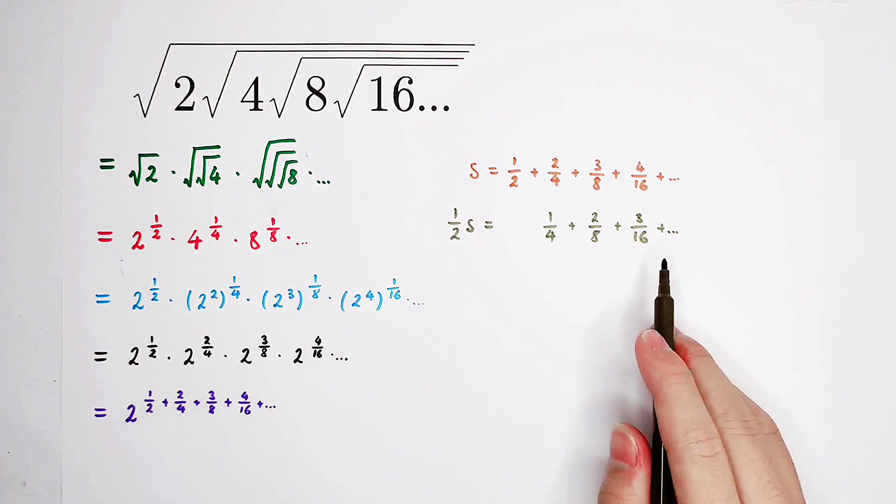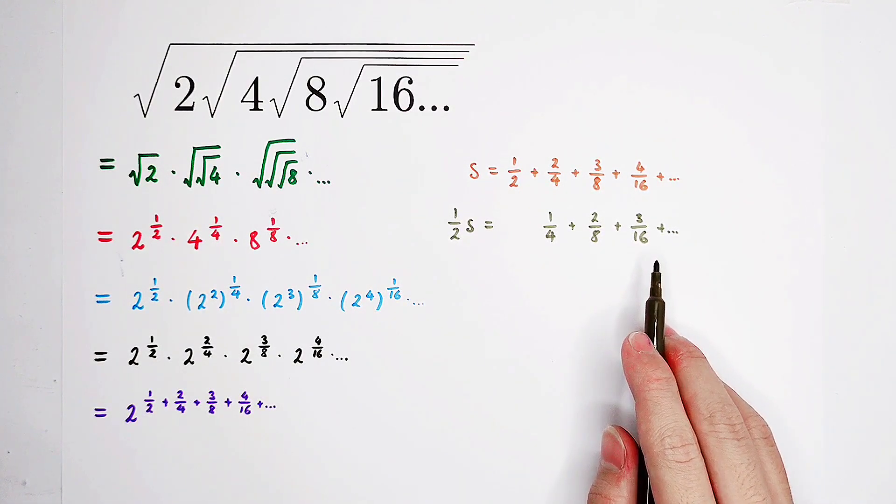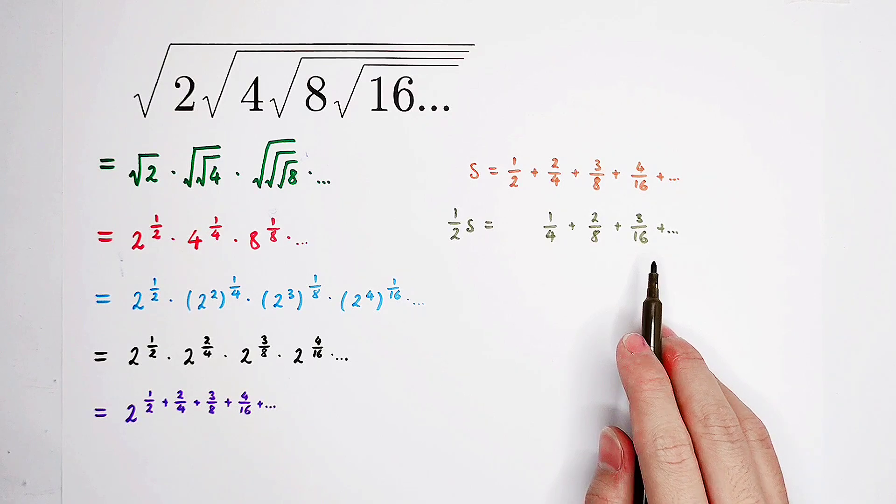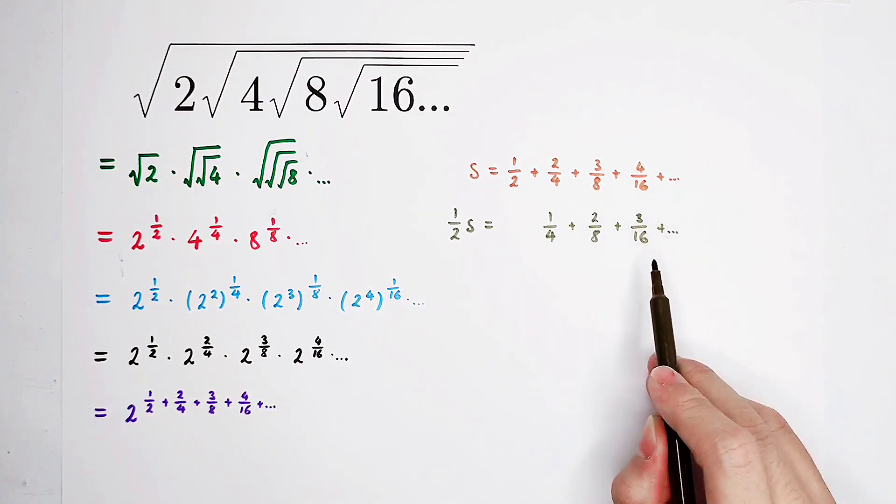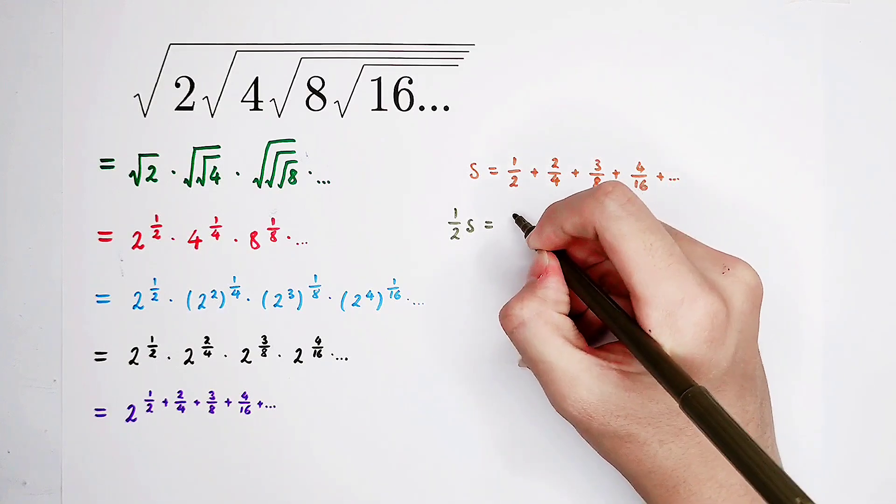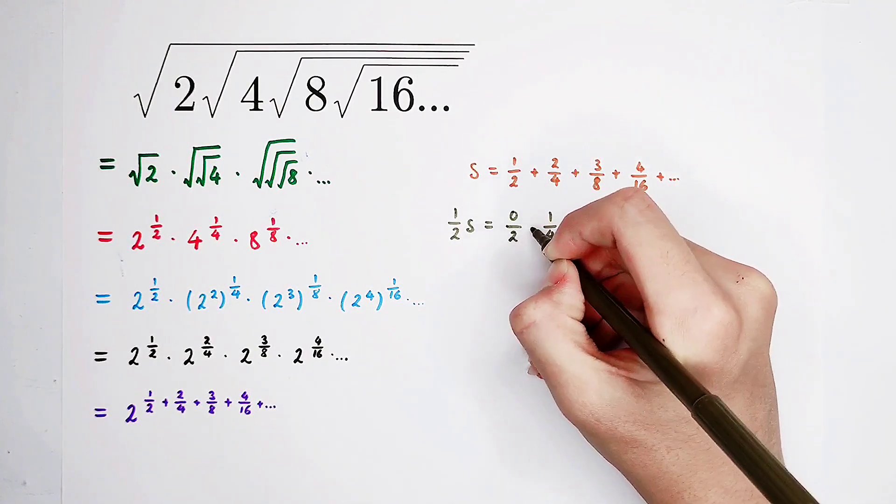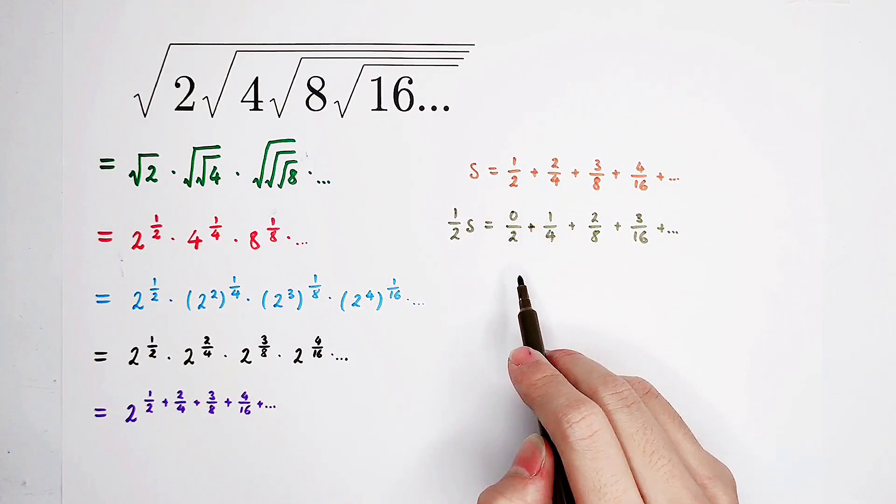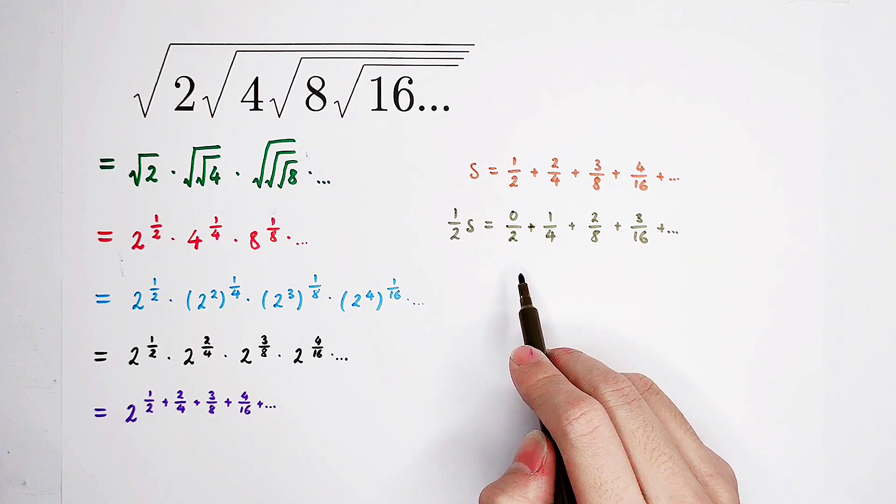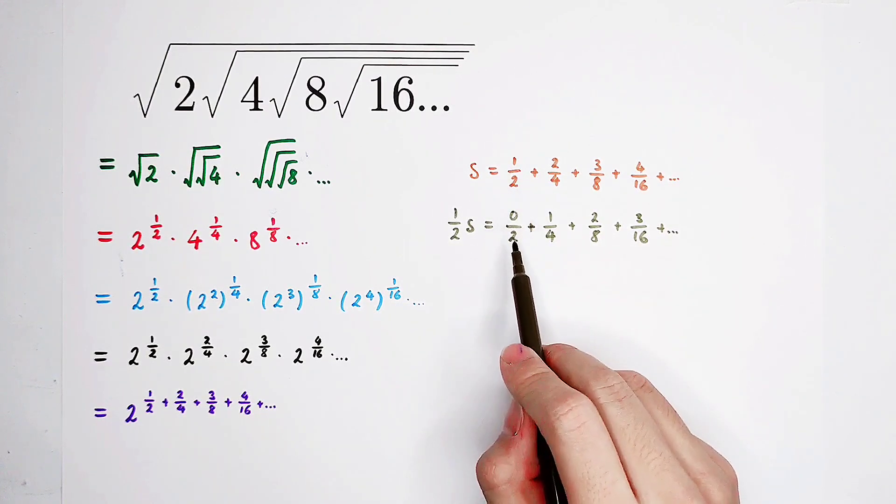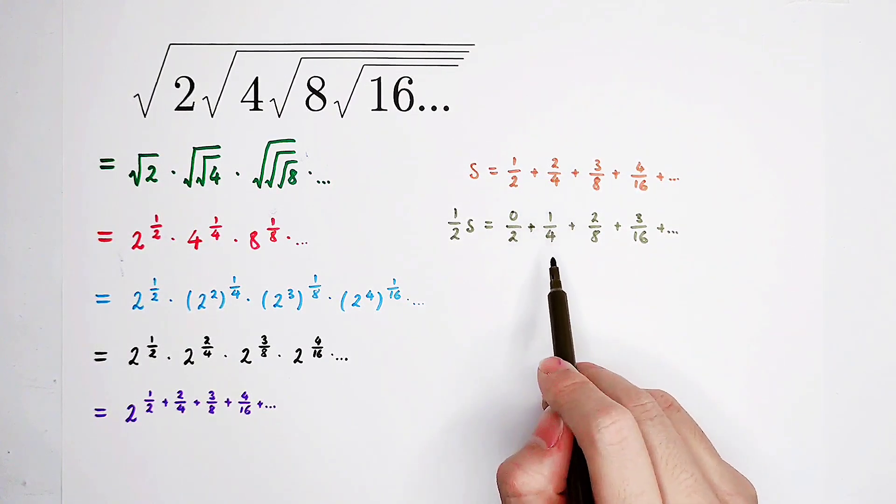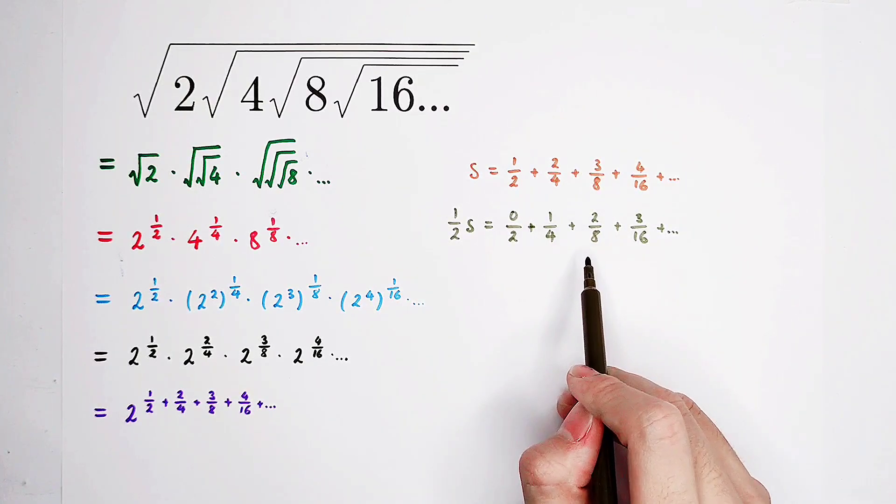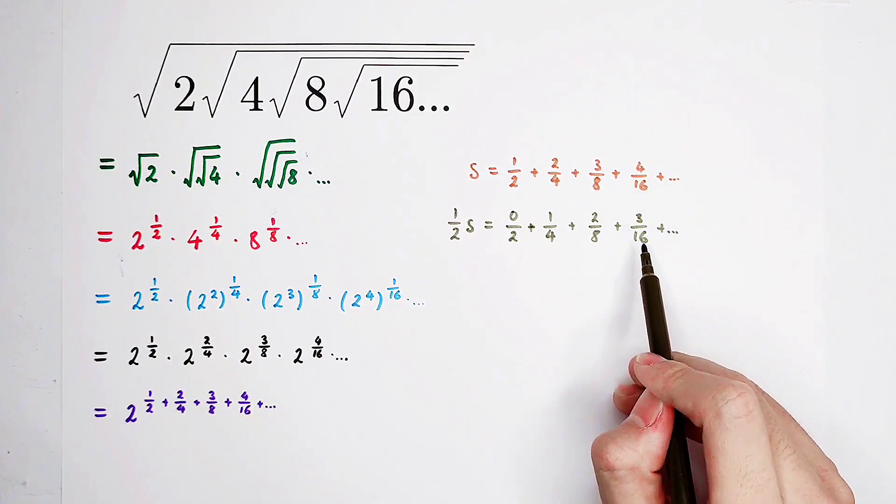Why do I write it in this way? Because therefore, you can see it clearly. You can spot the denominators. The first one is 0, so I'm going to write it as 0 over 2. So now, 1 over 2, 0 over 2, 2 over 4, 1 over 4, 3 over 8, 2 over 8, 4 over 16, 3 over 16.